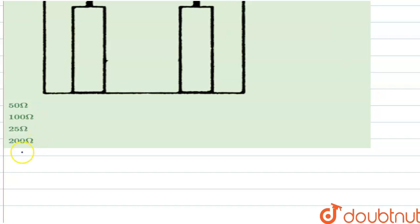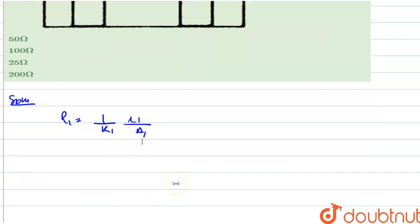So initially let R1 be the resistance. So R1 is equal to 1 upon K1 into L1 upon A1. So finally, the resistance will be R2. So R2 is equal to 1 upon K2 into L2 upon A2.